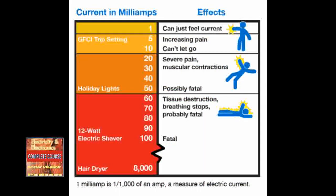Electric shock levels are rated by value of current flow and their effect on the human body. Current of 1 mA is barely noticeable. Current of 5 mA is the highest harmless value but can be painful. From 10 to 20 mA, there can be sustained muscle contraction — the victim cannot let go. From 100 to 300 mA, paralysis of respiratory muscles can be fatal, with severe internal and external burns and organ damage. 2 A can cause cardiac arrest and is most times fatal.